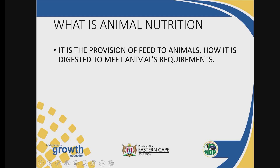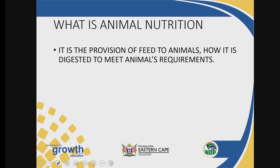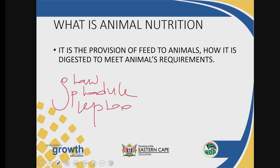The physiological needs of animals: animals need feed so that they will be able to grow. Animals need feed so that they will be able to produce. Animals also need feed so that they will be able to reproduce. And finally, they also need feed for maintenance.